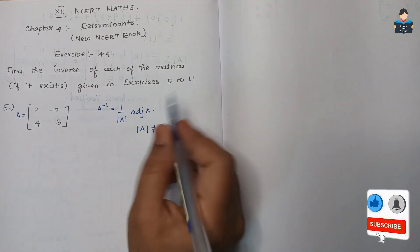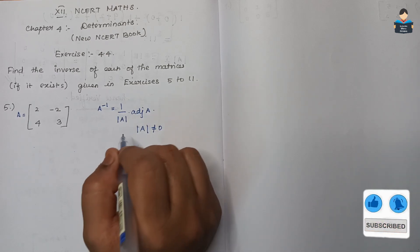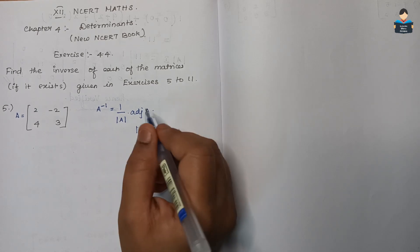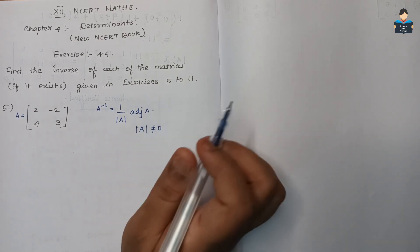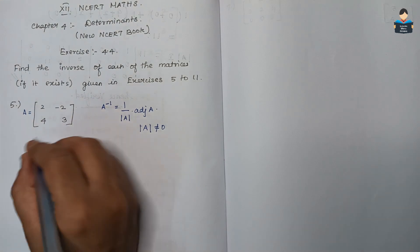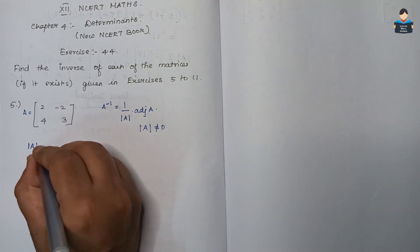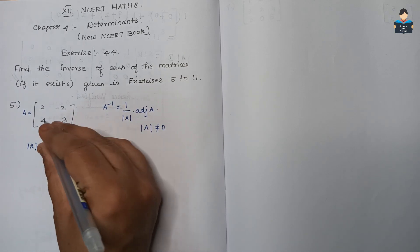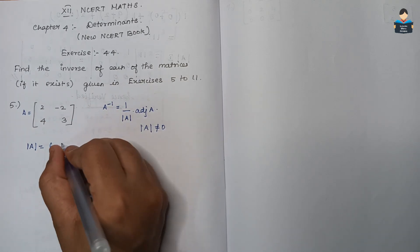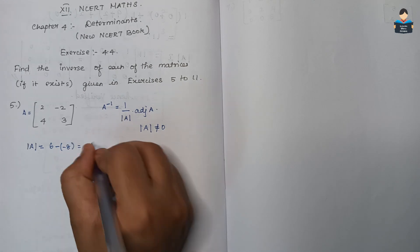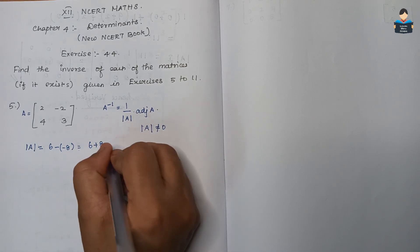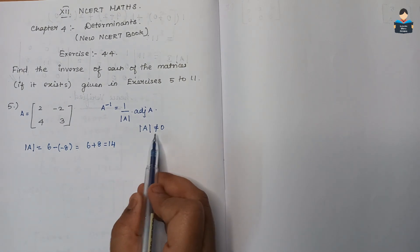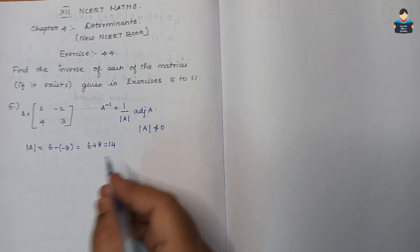For question 5, determinant of A equals 3 into 2, which is 6, minus 4 into minus 2, which is minus 8. So 6 plus 8 equals 14. Since determinant of A is not equal to 0, the inverse exists.